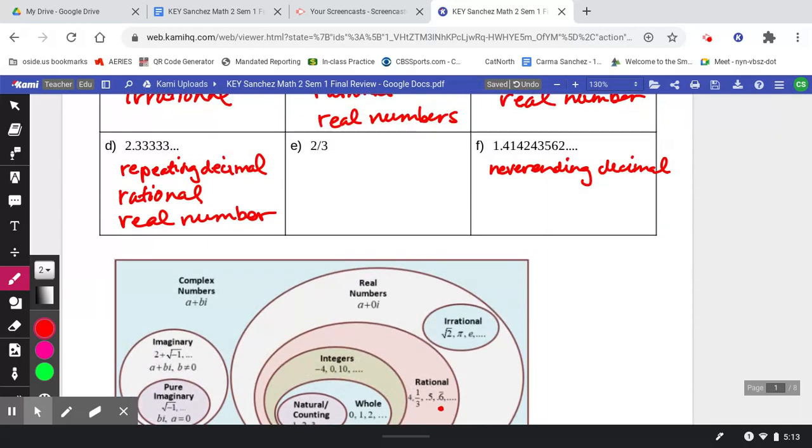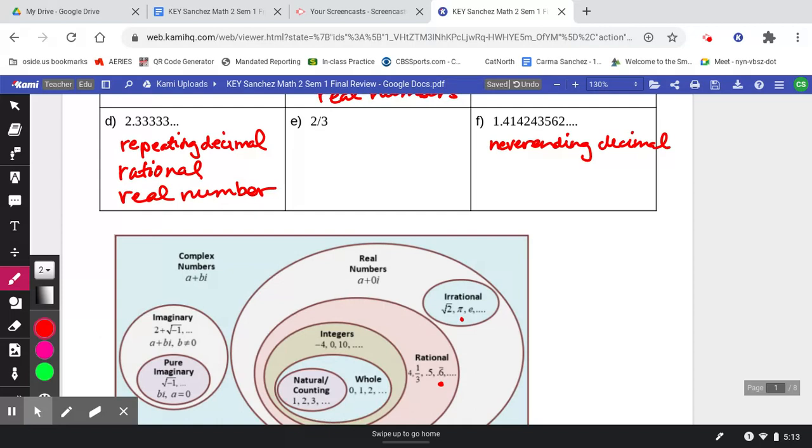But down here on the end, this never-ending decimal, it's not repeating and it keeps going and going. Notice the dot, dot, dots. A non-repeating or never-ending decimal falls under irrational. And that means it's also a real number within the complex number system.